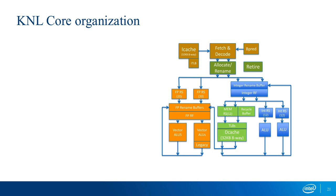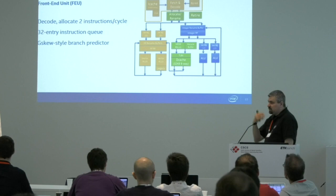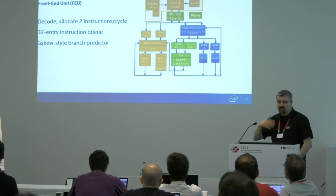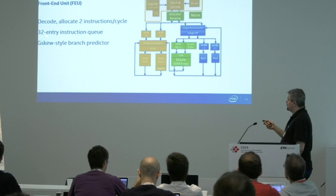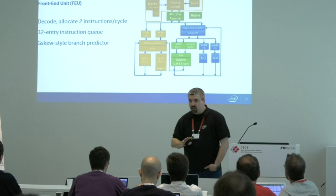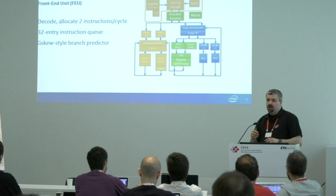The front-end unit takes instructions from the instruction cache or memory, decodes them, and can feed two instructions per cycle from the decoder into the reservation station. There's a 32-entry instruction queue and a GBQ-style branch predictor — less powerful than Xeon's but it combines several different prediction approaches. The branch predictor is called GBQ because of these different prediction approaches combined.